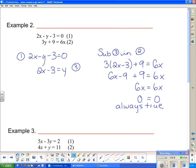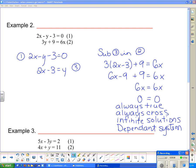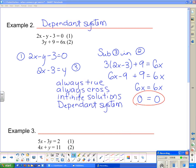So if you get something that is always true, the lines always cross. Which means we have infinite solutions. And if we have infinite solutions, that means that it is a dependent system. So we'll just put that title up there and that's our dependent systems.